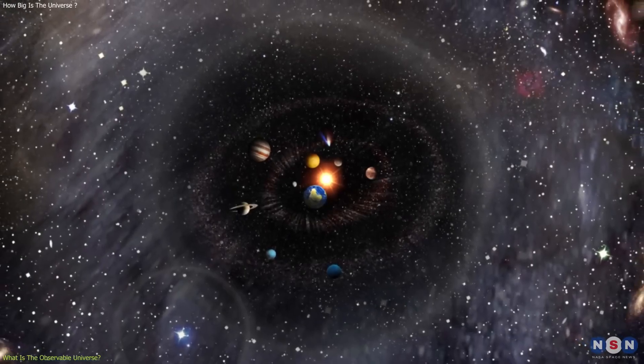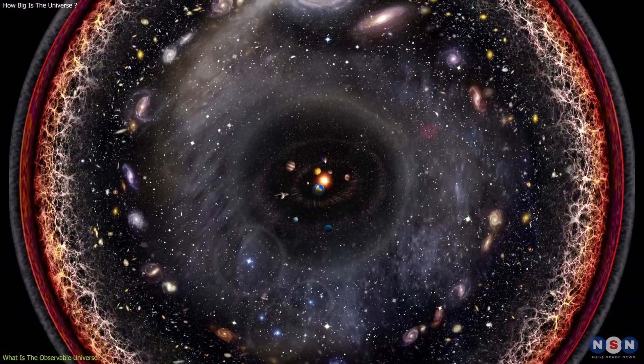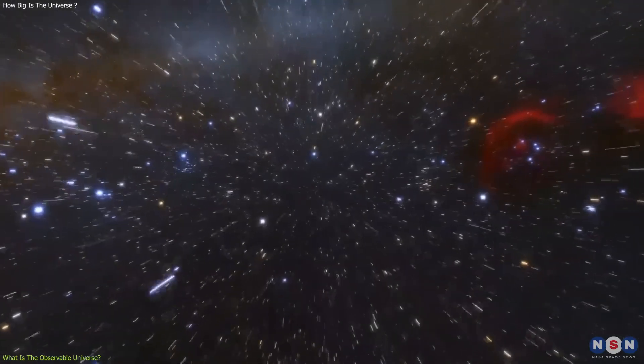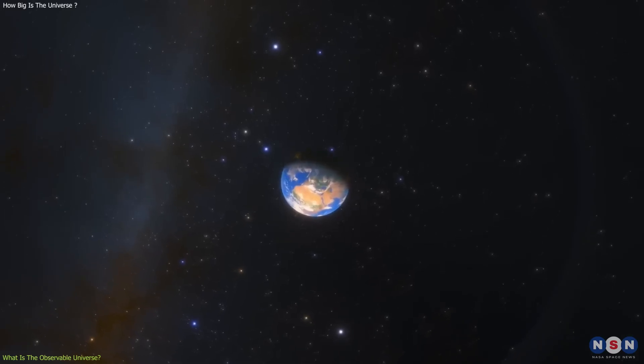The observable universe is the part of the universe that can be seen from Earth. But what does that mean exactly? Well, it means that we can only see the light that has reached us from distant objects since the beginning of the universe.